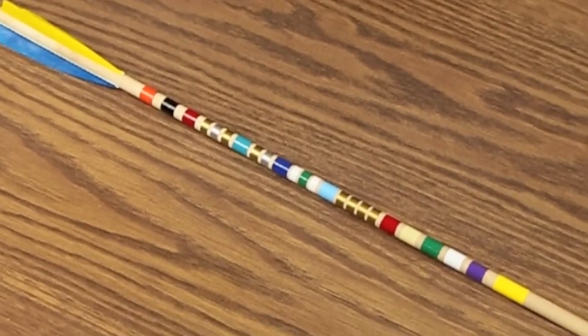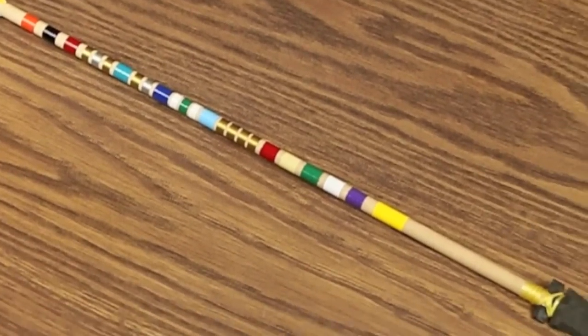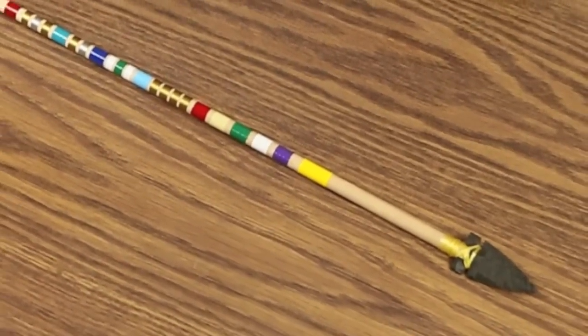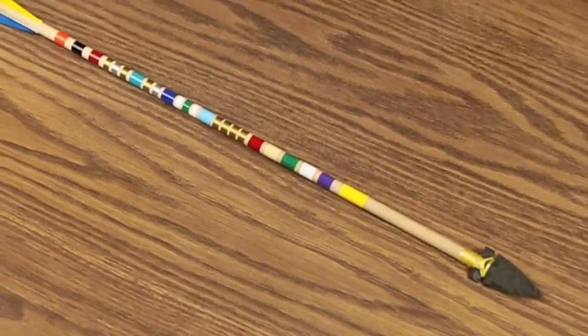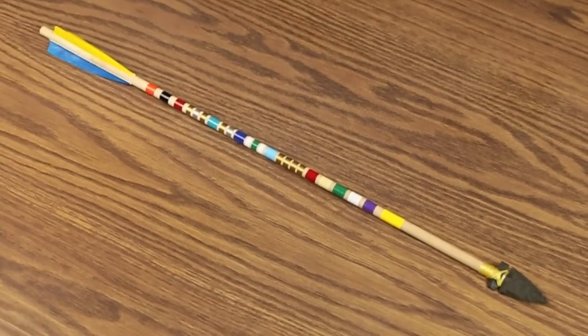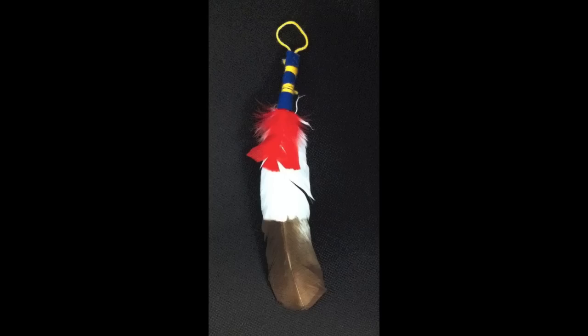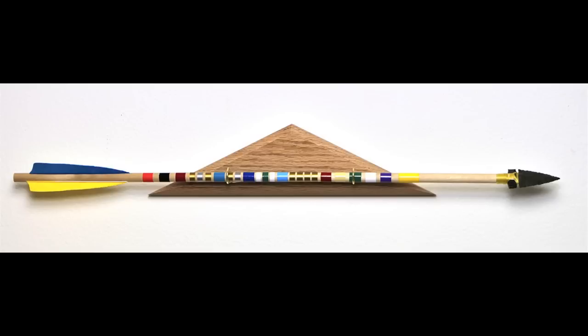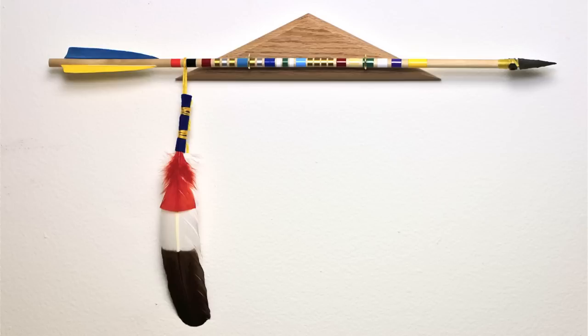Once completed, each scout will have a custom arrow, including color bands appropriate for each of their achievements. If you're also looking for the ceremonial feather and or a plaque upon which to hang the arrow, please check out our website. We offer these items as well. We hope your scouts enjoy their Arrow of Light Awards.